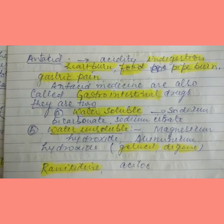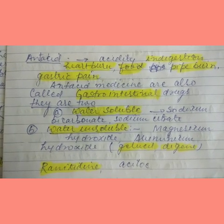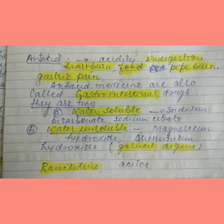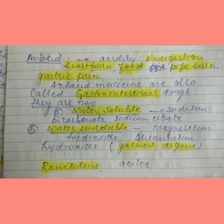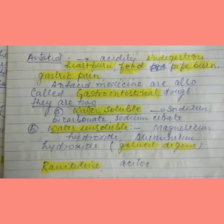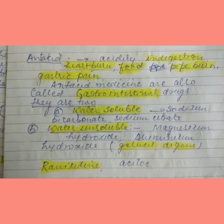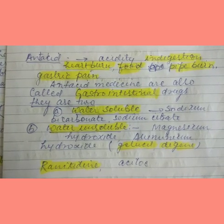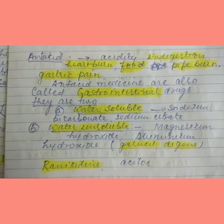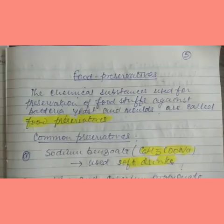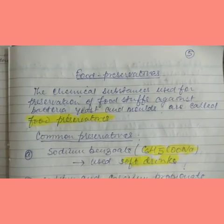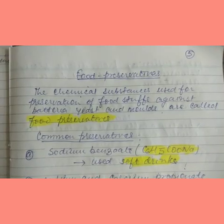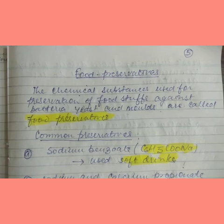The second type is water-insoluble — this includes magnesium and aluminium hydroxide, which come under brand names like Gelosyl and Digene. The next anti-acids are ranitidine and Aciloc. Next, we are moving on to food preservatives.